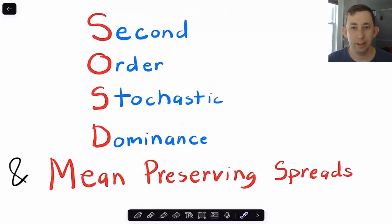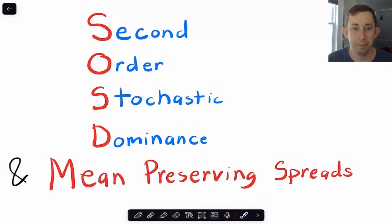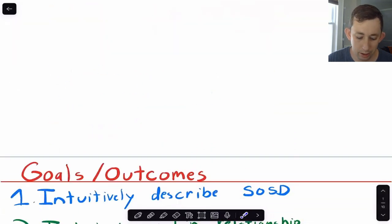Hi guys, welcome back to In Case of Econ Struggles, welcome to another micro struggle. Today I'm talking about second order stochastic dominance or SOSD. I'm also going to talk a little bit about what it means to be a mean preserving spread. Timestamps are below, but let's quickly go over what I want to do in this video and then we'll get right into it.